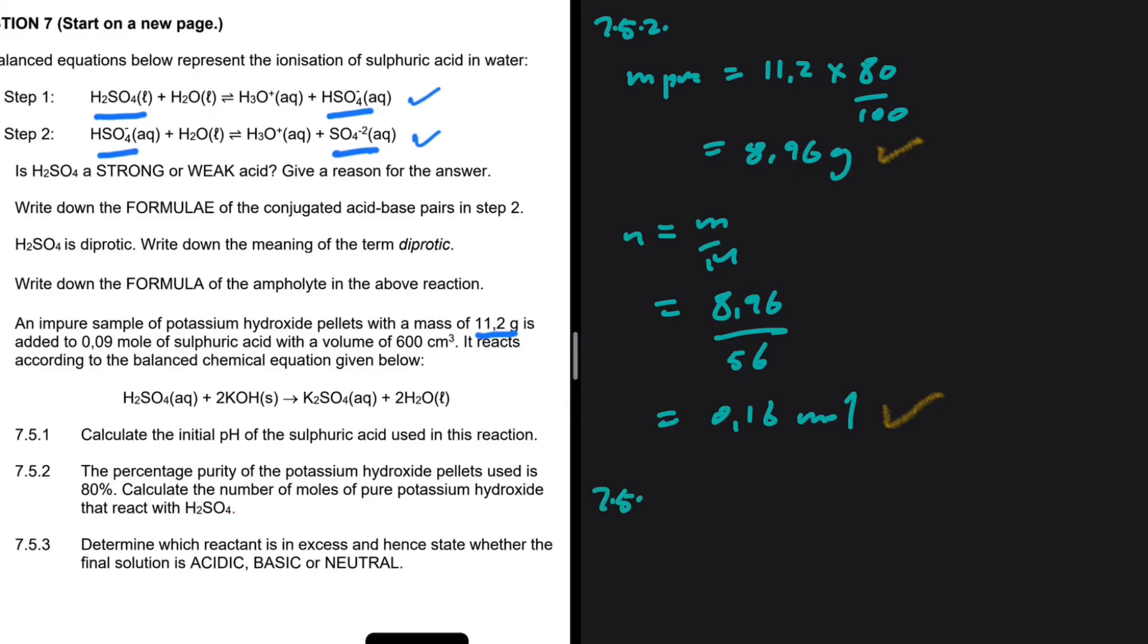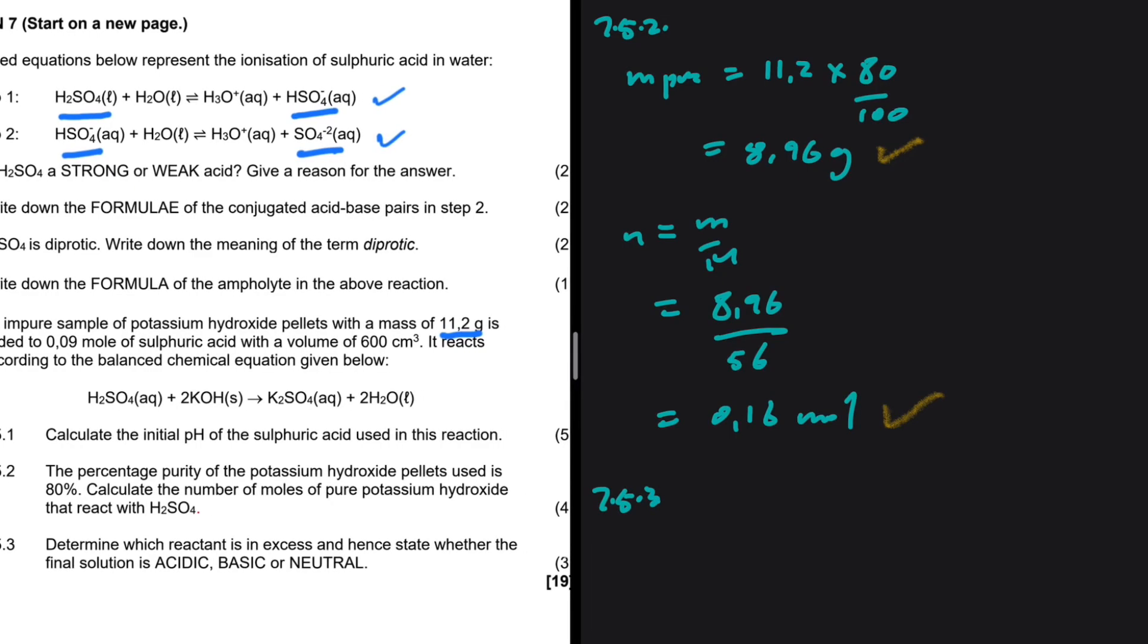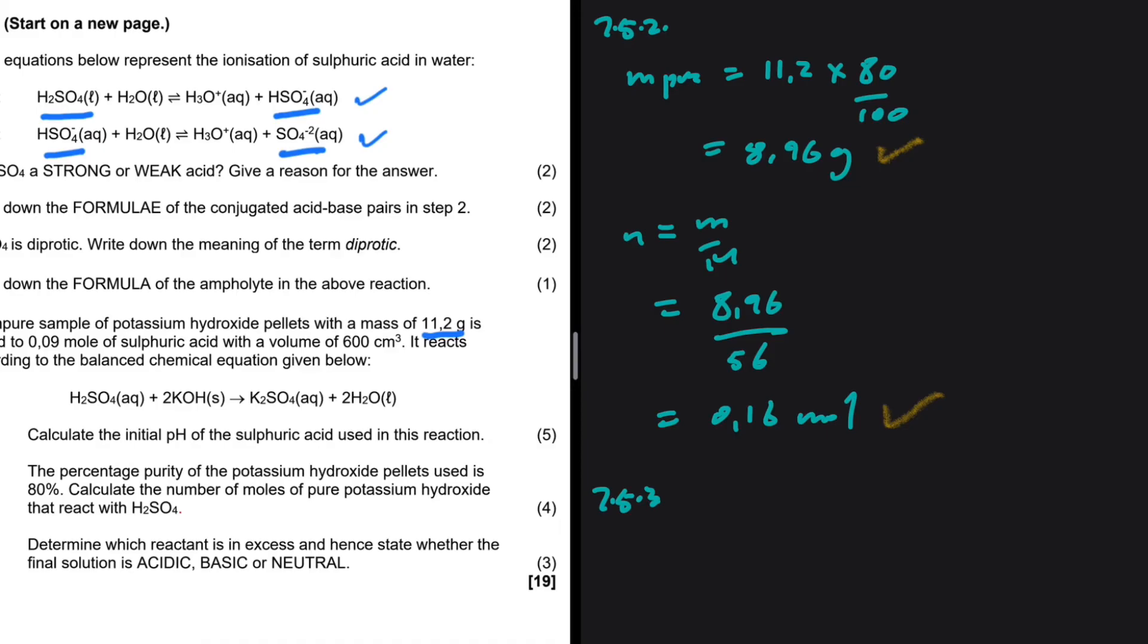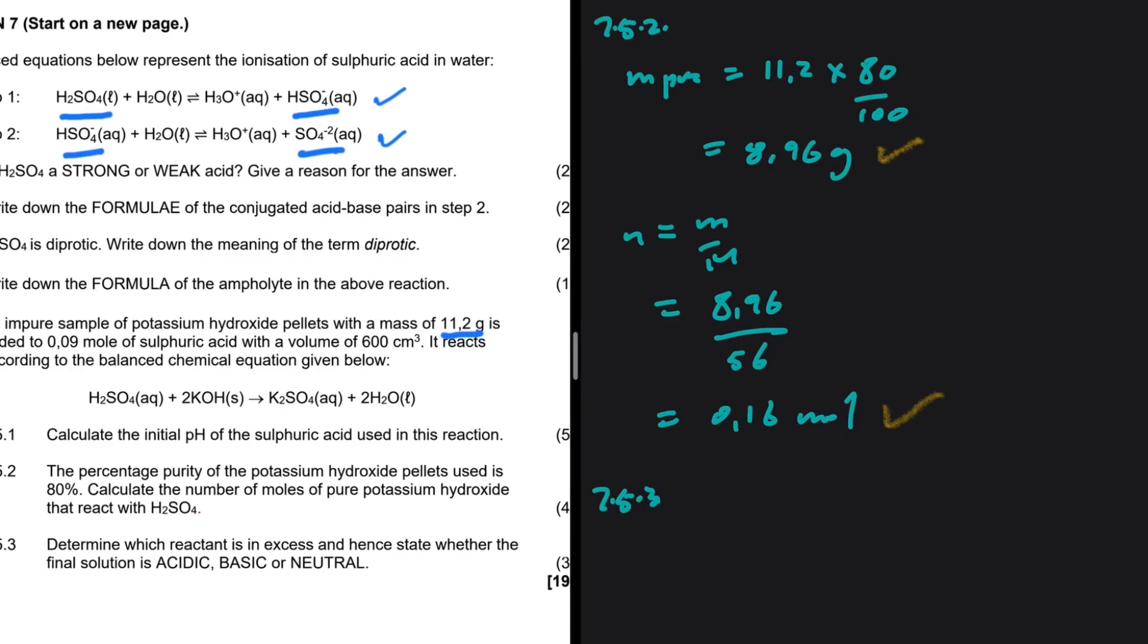7.5.3. Determine which reactant is in excess and hence state whether the final solution is acidic, basic, or neutral. What a beautiful question. Let's take a look. The number of moles of H2SO4 that we have is 0.09. The number of moles of potassium hydroxide that we have is 0.16. These are the number of moles that we have. So let's perform a test.